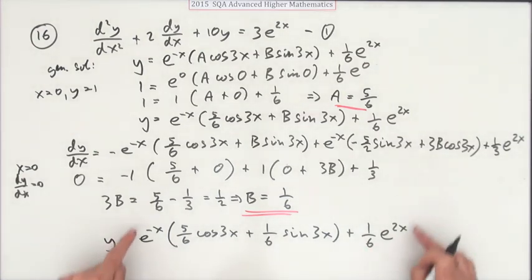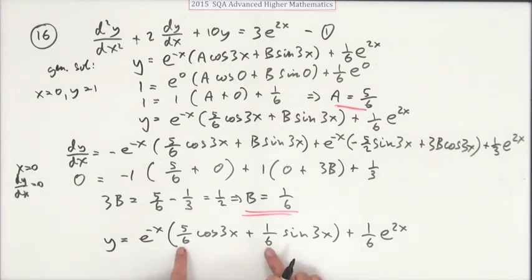You could take the sixth out of them all, but that would involve another bracket around the whole lot. But you could take that sixth out of here, couldn't you? You could take that sixth out and make it a sixth of that, and just leave it as a nice 5 plus sin 3x. That would be a little bit neater.